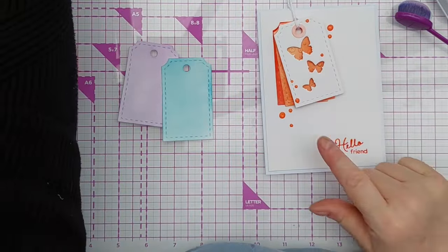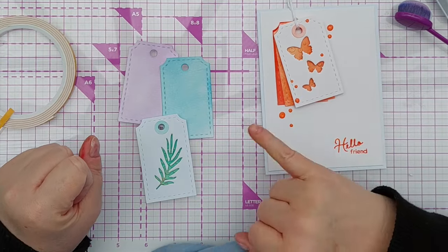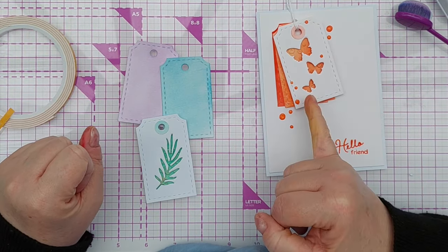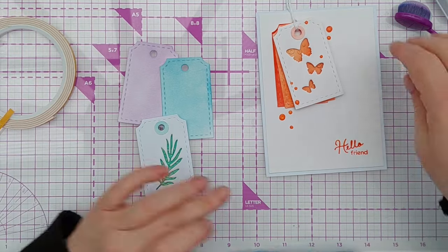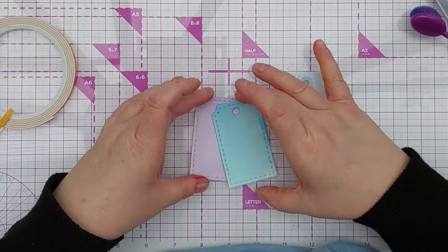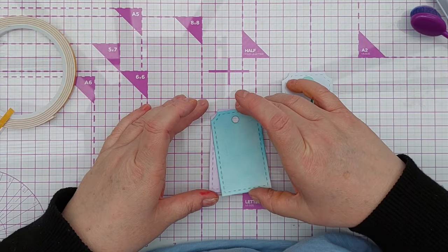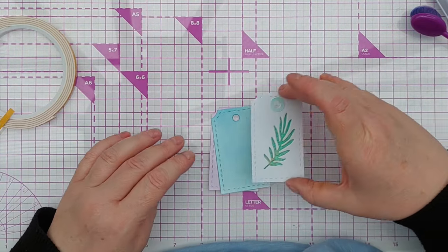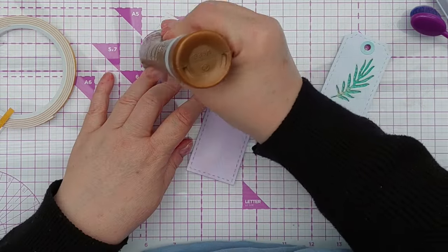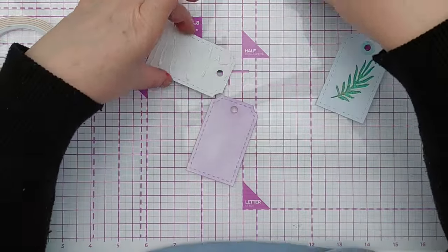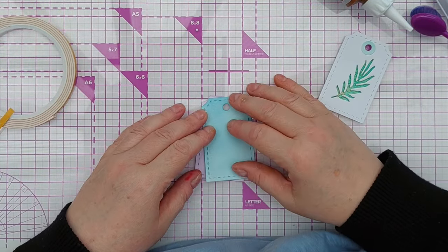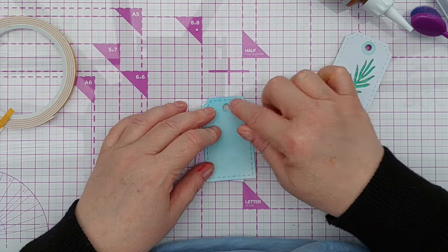On this card I only used two colors - Tutti Frutti which is an orange and Bellini which is a lighter orange. But for this card I'm going to use three colors: Sweet 16, It's a Boy, and In the Park. To adhere them together I'm going to use my high-tech glue and line up the hole.